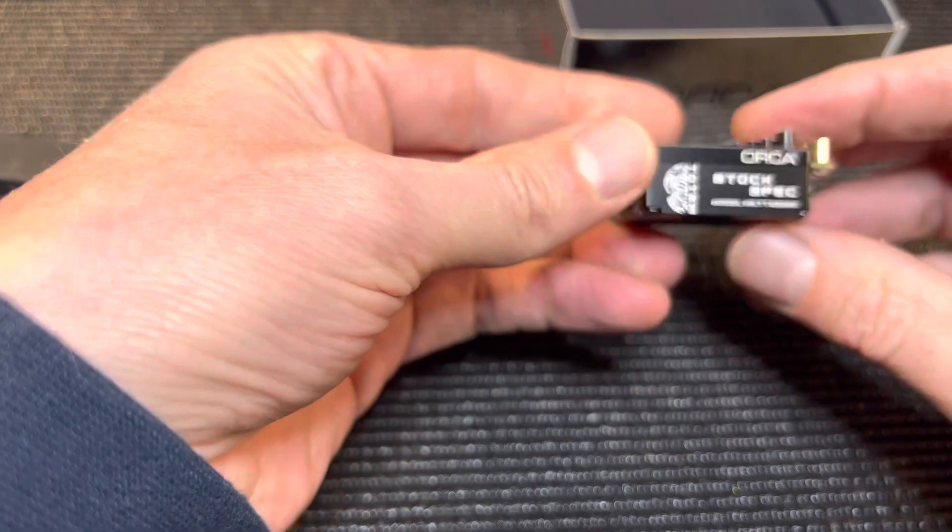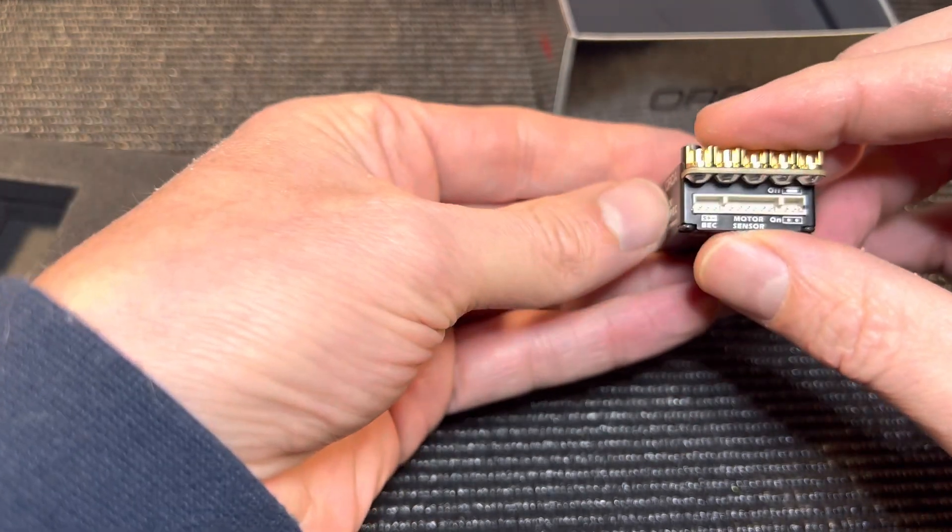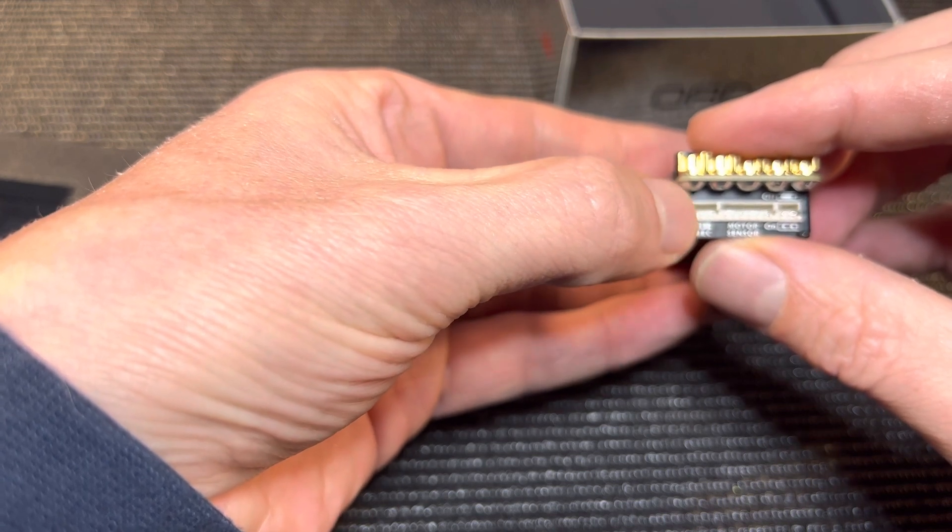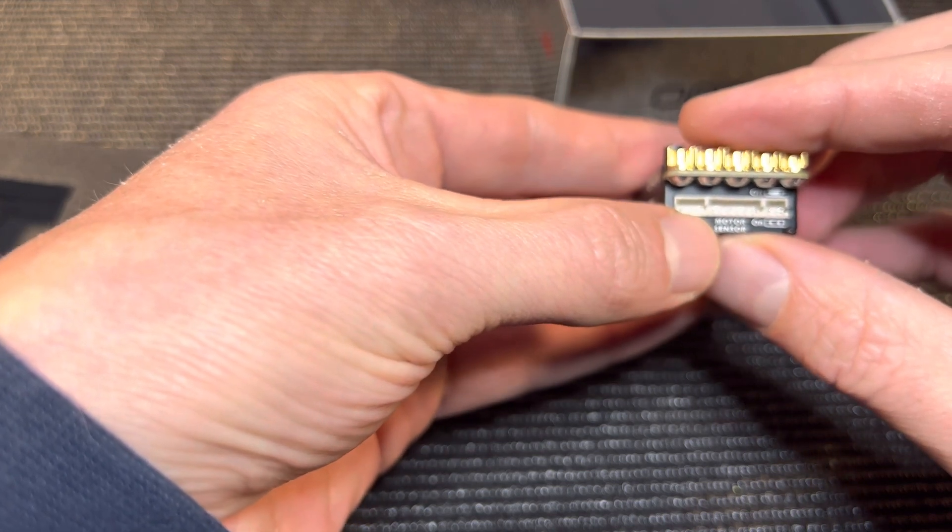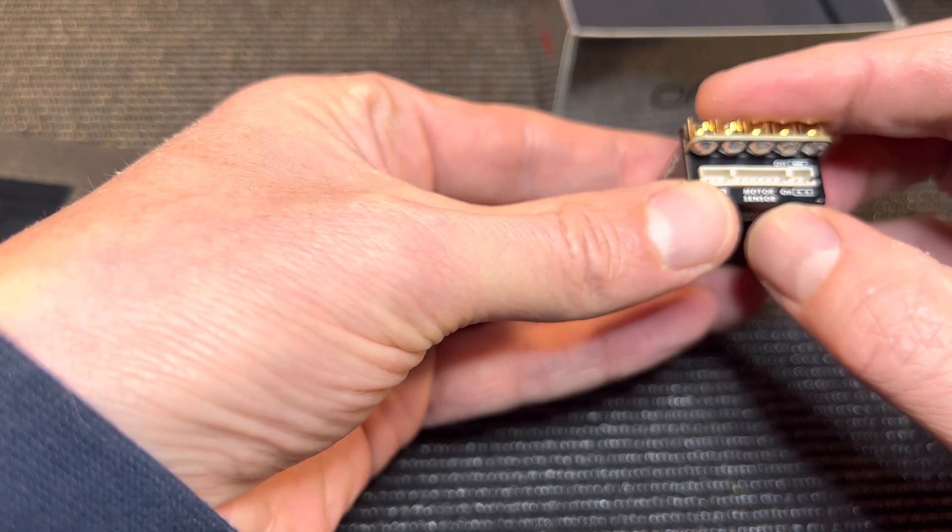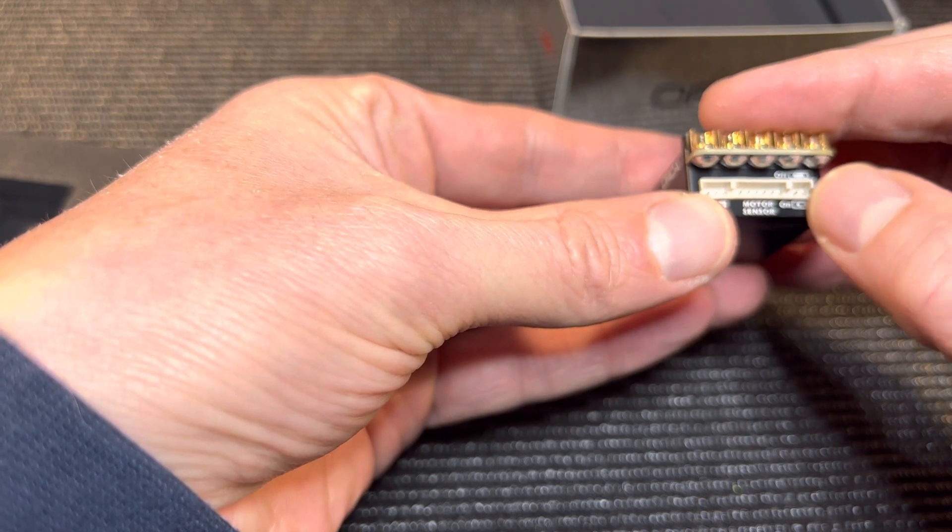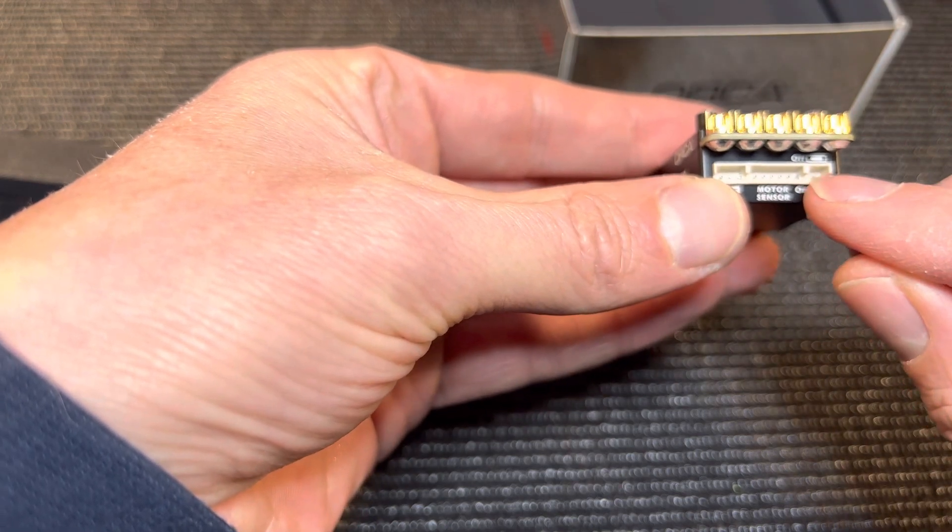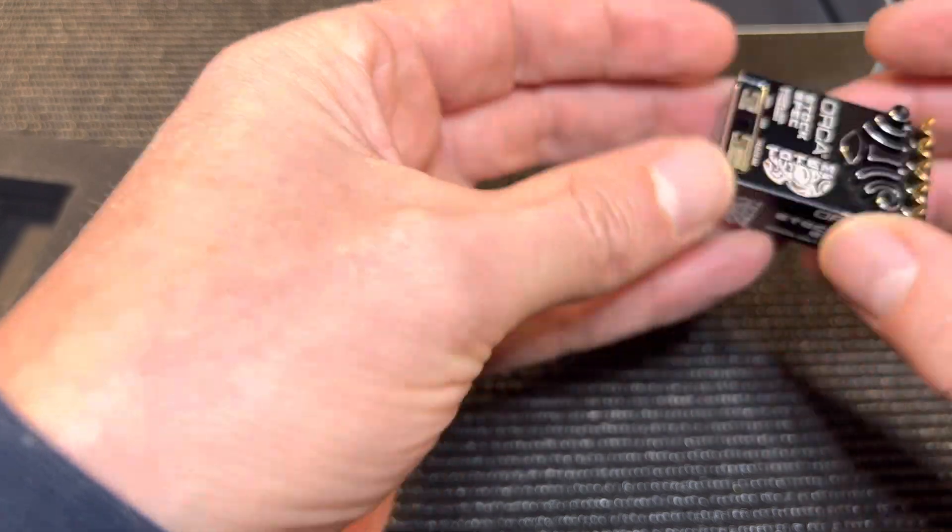Wow, that's nice. Stock spec says here we've got, you're going to plug in your lead that's going to go to your receiver there. You've got your motor sensor cable and an on-off switch. I was trying to figure out what that was. That'll be for an on-off switch, probably optional. But let's have a look.